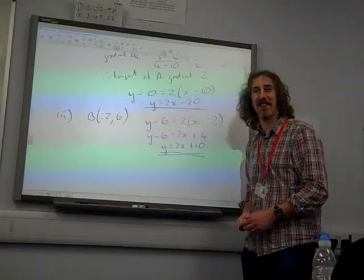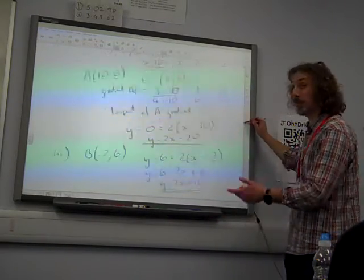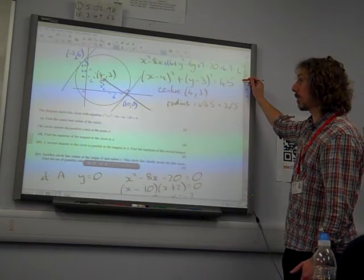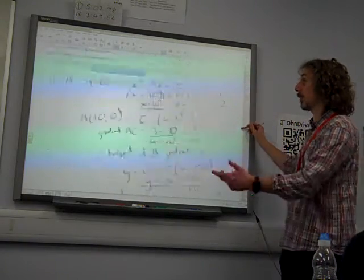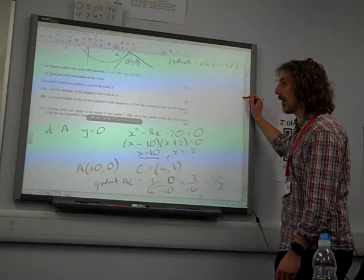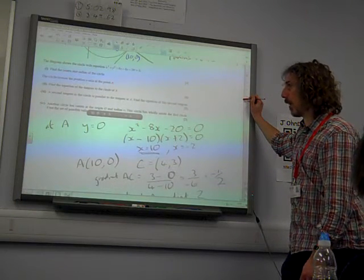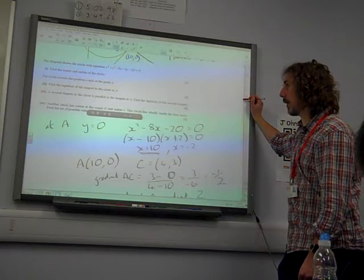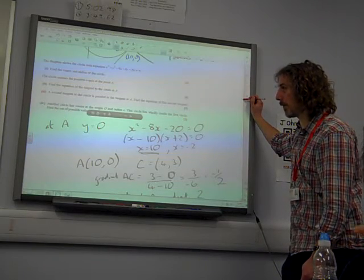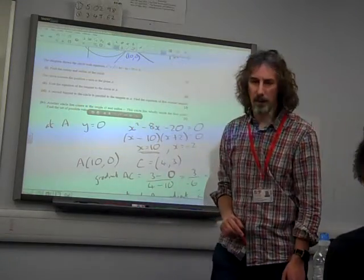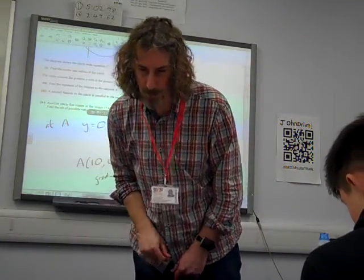Oh, sorry. I was just thinking about stuff. There's still part 4 to go. Don't stop the video. Alright, good. But, yeah. Anyway, right. Last part. Another circle has center at the origin radius R. This circle lies wholly inside the first circle. I'll find the center of possible values. Oh, I've copied the wrong bit there. Of R. He did say of R, didn't he? The center of possible values of R.